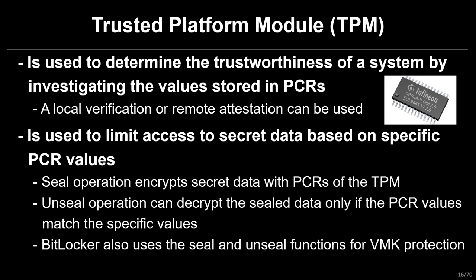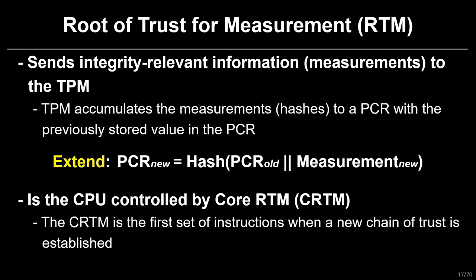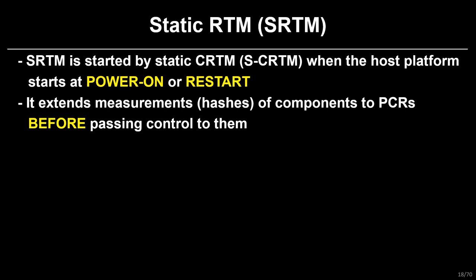BitLocker of Microsoft uses the SEAL and UNSEAL functions for VMK protection. The root of trust for measurement sends integrity-relevant information to the TPM. The TPM specification calls this accumulating operation 'extend.' As you see the extend process on the middle of the page, the TPM accumulates the measurements to a PCR with a previously stored value in the PCR. Because of this process, a small bit change to a PCR value will affect all the following extended values. RTM is a CPU-controlled core, and it is the first set of instructions when a new chain of trust is established.